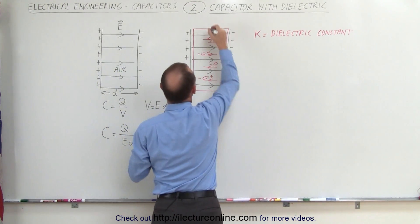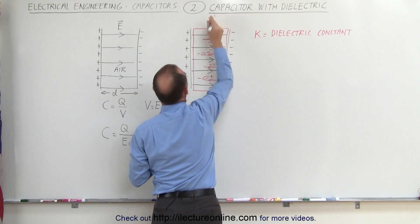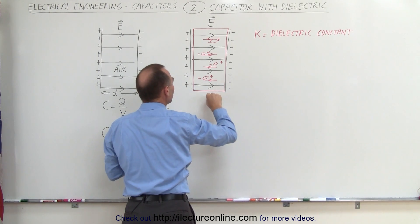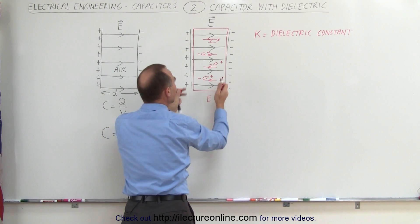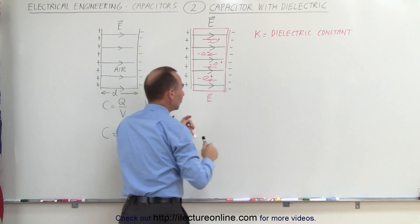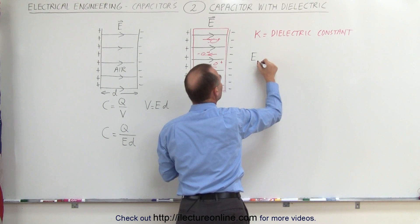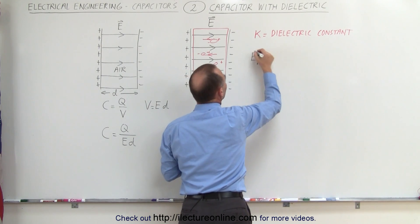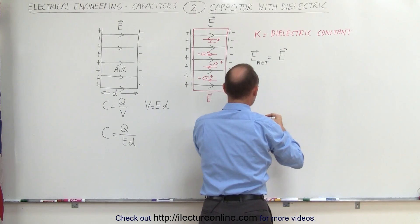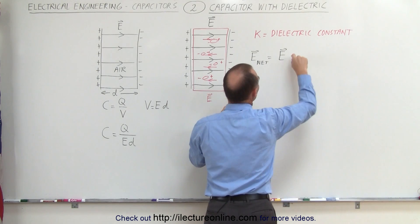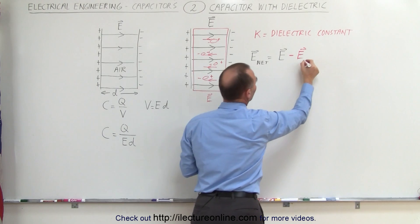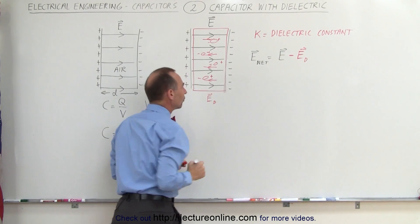Because of that, we have our original electric field — the field caused by the charges on the capacitor plates — and then we have the induced electric field caused by the molecules inside the dielectric, which is in the opposite direction. The net electric field between the capacitor plates is going to be equal to the sum of these two: the strength of the original field minus the strength of the field caused by the dielectric, which I'll write as E sub D.